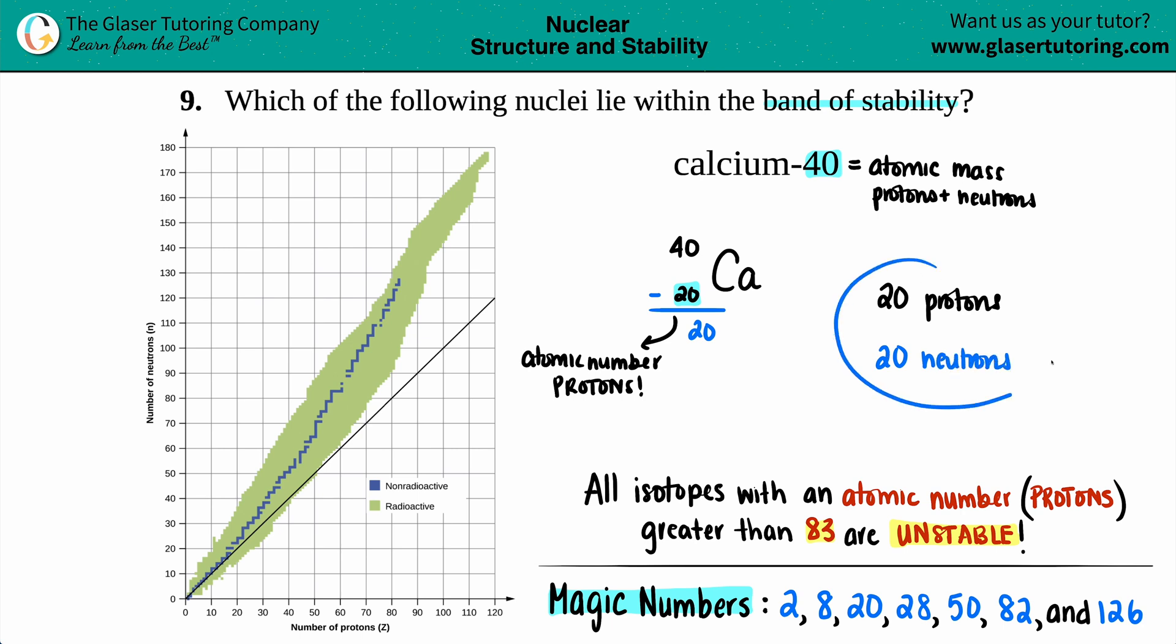Now let's see, with an atom that has 20 protons, 20 neutrons, would this be stable? That's what it means to be in the band of stability. Is it a stable isotope? Well, the first thing is, always know your magic numbers.